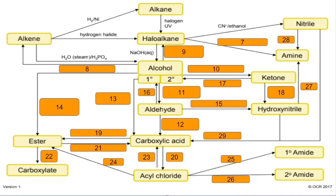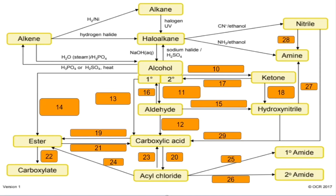Number seven: haloalkane to amine — you react it with ammonia in the presence of ethanol. Number eight: alcohol to alkene — you react the alcohol with phosphoric acid or sulfuric acid and you need to heat it. Number nine: alcohol to haloalkane — you need to react the alcohol with a sodium halide and you need sulfuric acid.